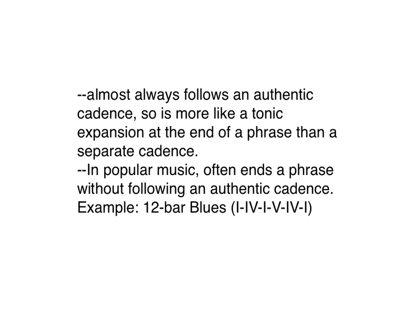The plagal cadence is more like an extension of the tonic at the cadence; the authentic cadence happened before it. It's rare in classical music to have a true plagal cadence without an authentic cadence preceding it, but in popular music this is really quite common. For example, in a twelve-bar blues pattern, where the typical harmony is one, four, one, five, four, one — that would be a real plagal cadence. We've all heard things like that.